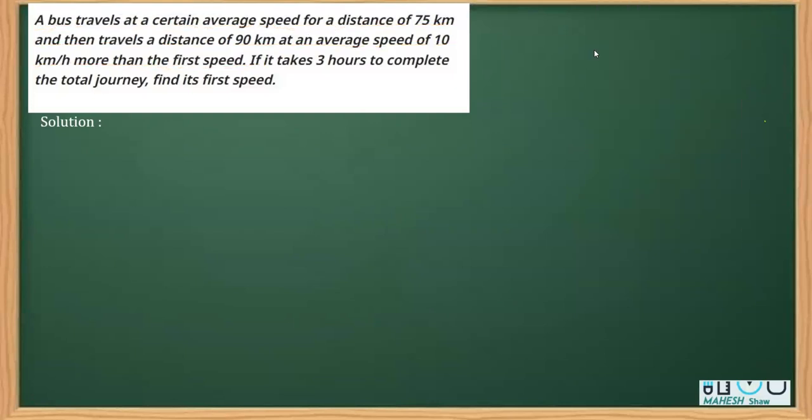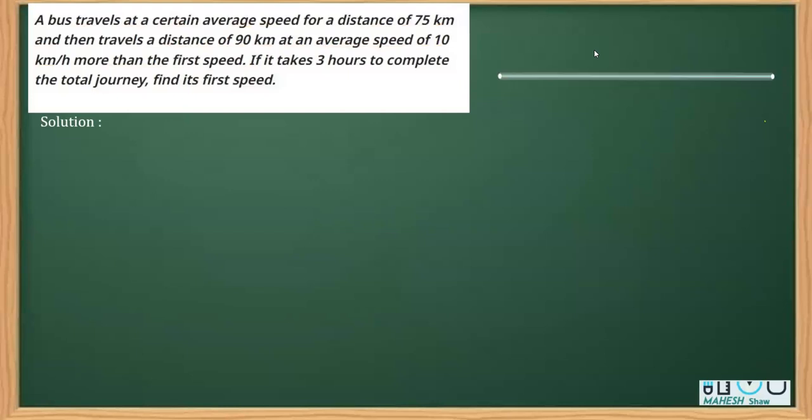Let's say the total journey is from A to B. I took this point as A, this as B, and let's say the first 75 kilometers - this is point C. This is the first 75 kilometers, and the other is 90 kilometers. These are the two distances covered.